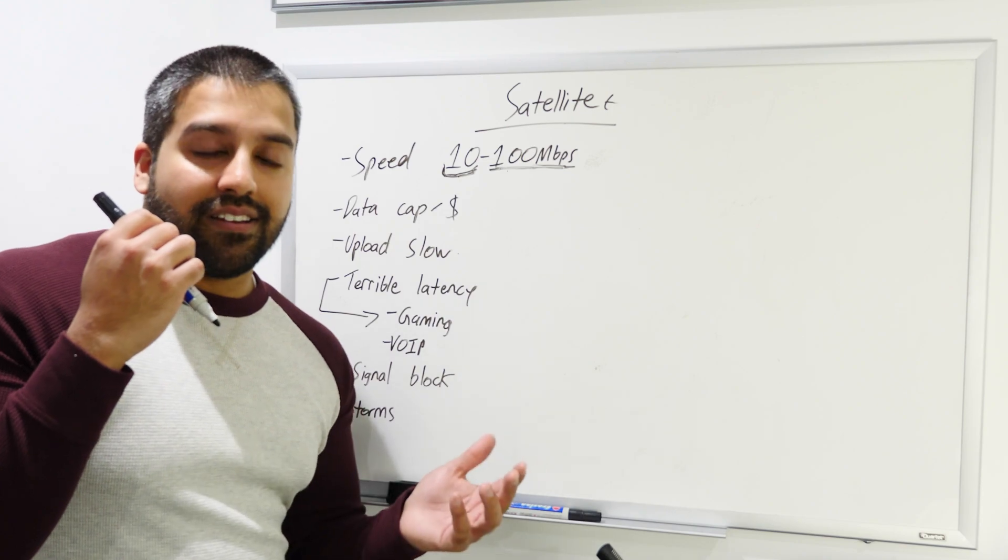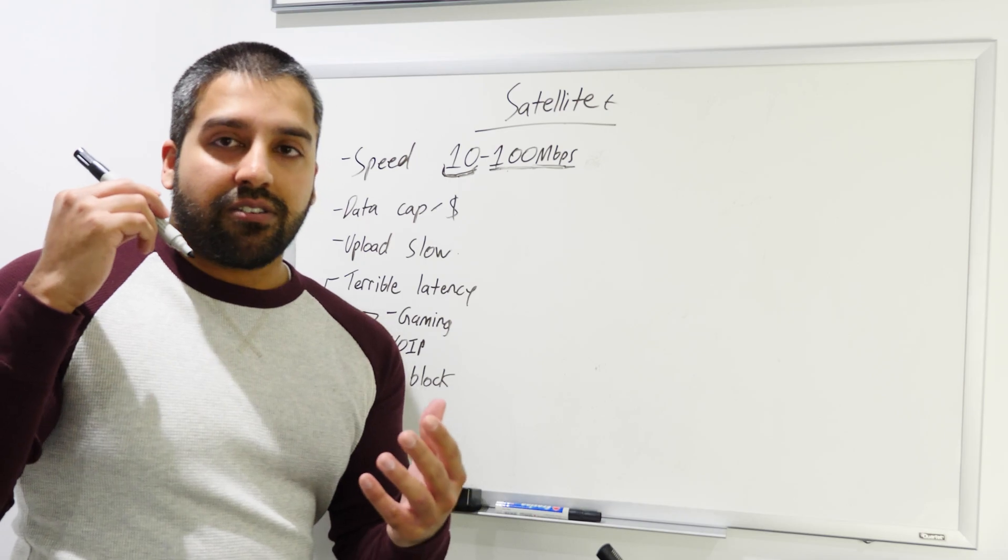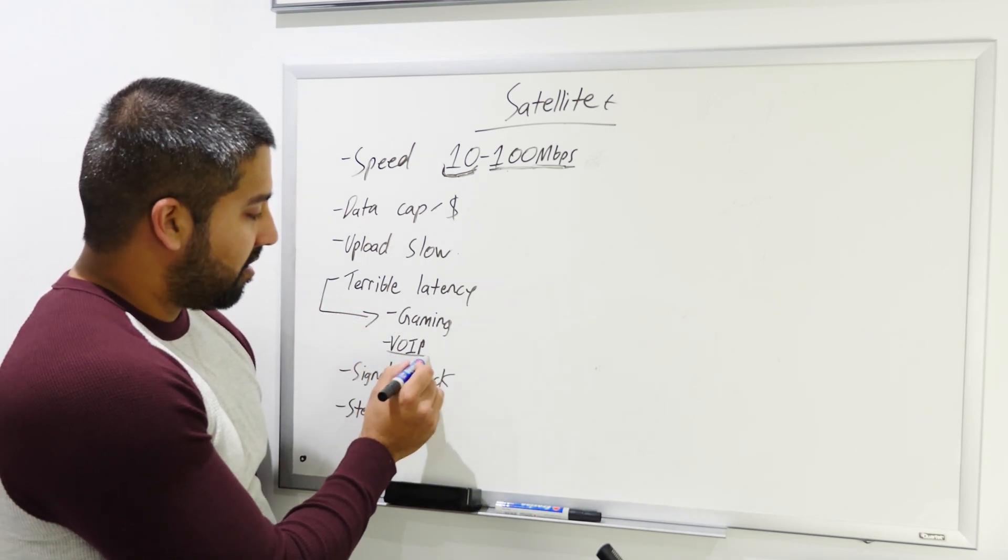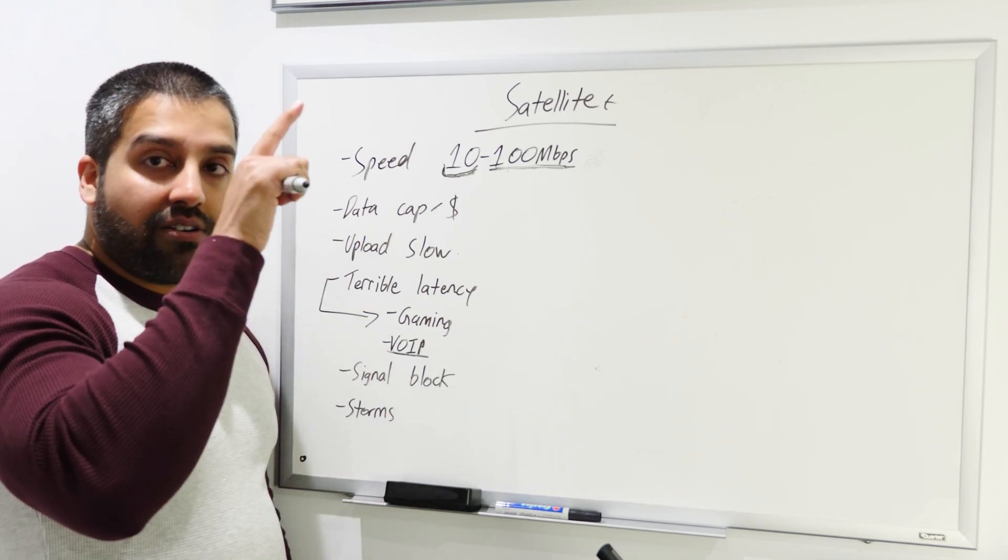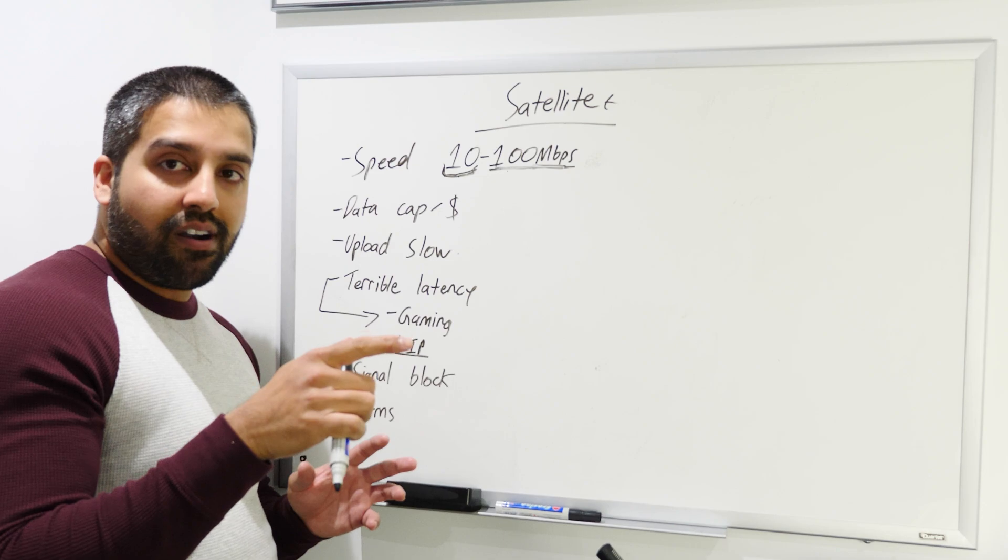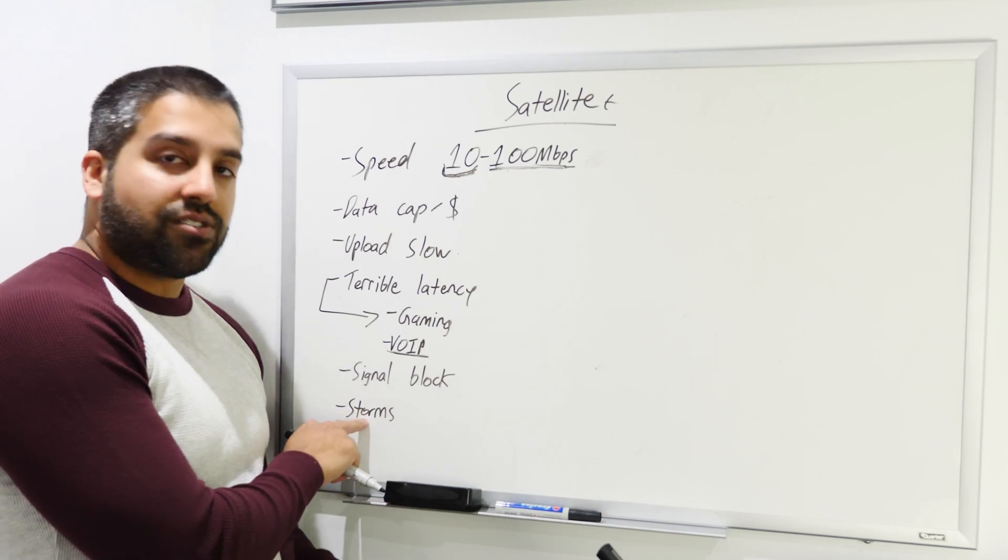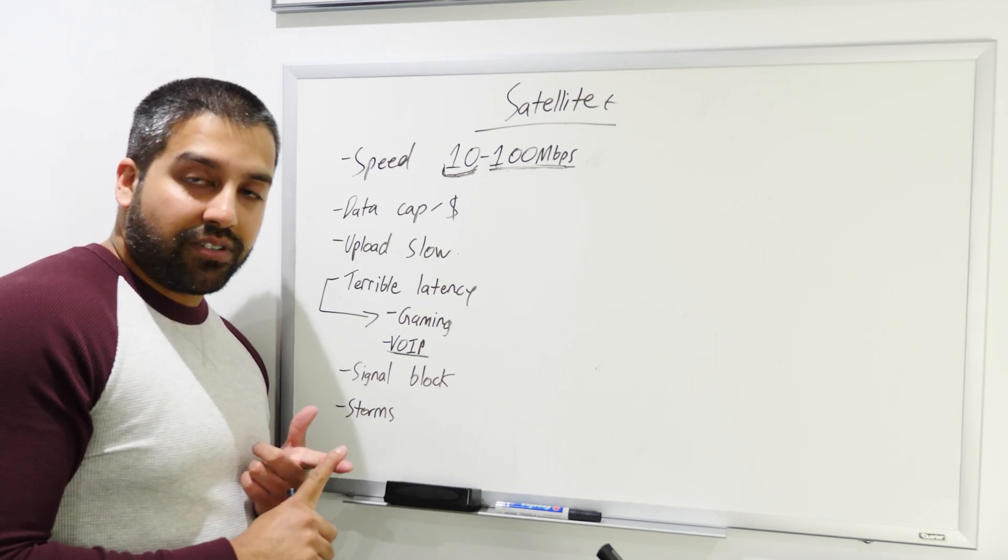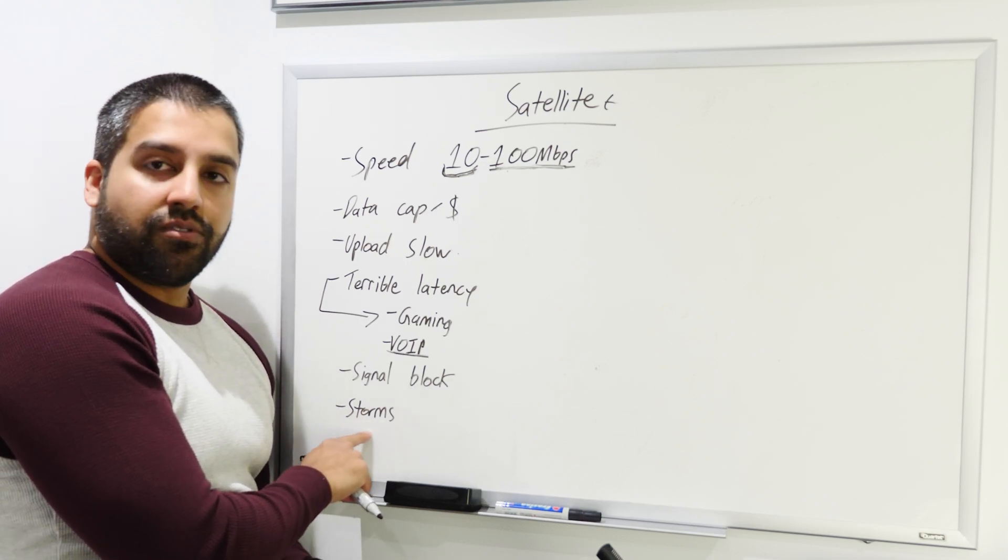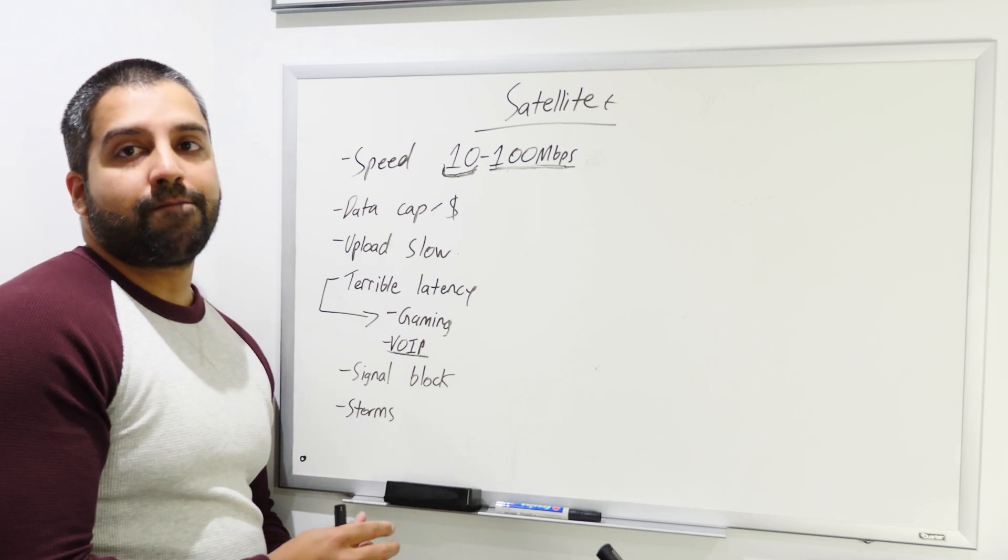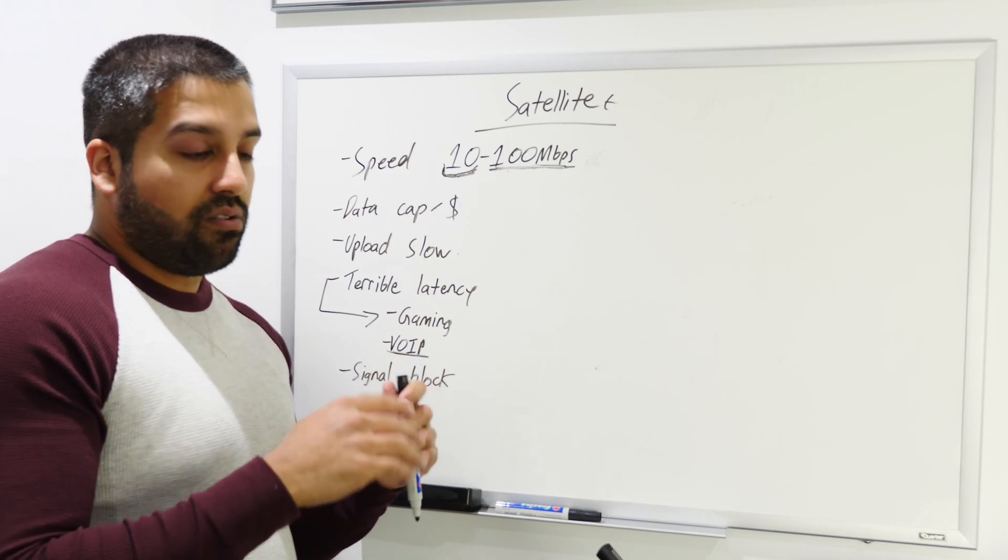The next thing is signal block. If your satellite on your house or apartment has a lot of buildings in the way blocking signal, your signal can be incredibly poor. Lastly is storms. Anyone who has a satellite dish for TV or satellite for internet will know that storms are their worst natural enemy. Storms will just make your signal horrendous or just drop it all together.